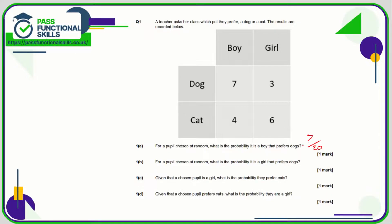What is the probability that it's a girl that prefers dogs? That is three out of twenty. For part c, we're choosing from the girls now — in total there are nine girls. Of the nine, how many prefer cats? That is six out of nine.